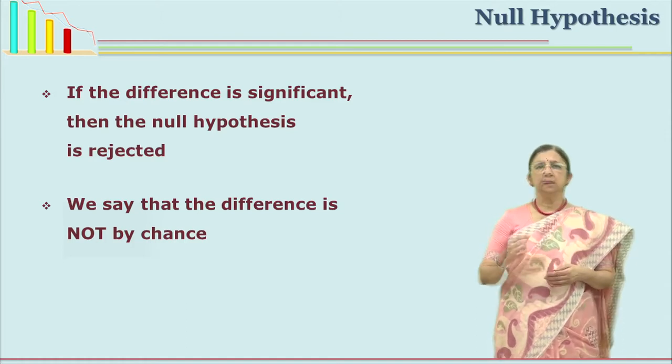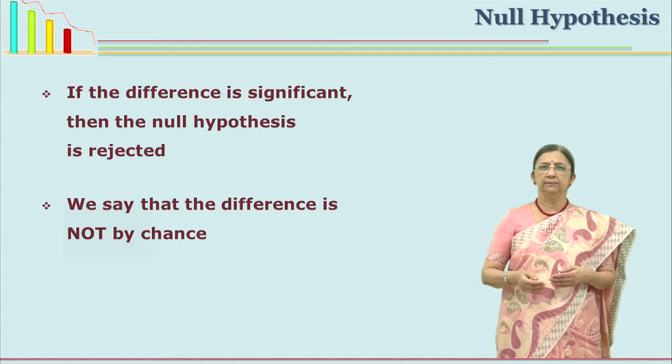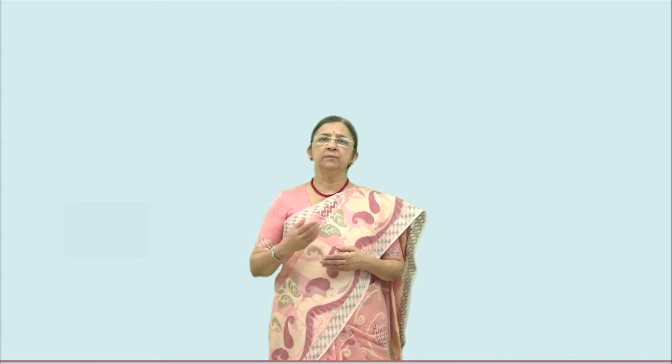We also say that if at all there is a difference, it is by chance. We have already seen what the confidence level or confidence interval is. Generally in statistics we use 95% confidence level or 99% confidence level. When we are rejecting a null hypothesis at 95% level, we are saying there may be a 5% chance of this not being true. At 99% level, there is a 1% chance, but otherwise 99% of the times you will get the same results.